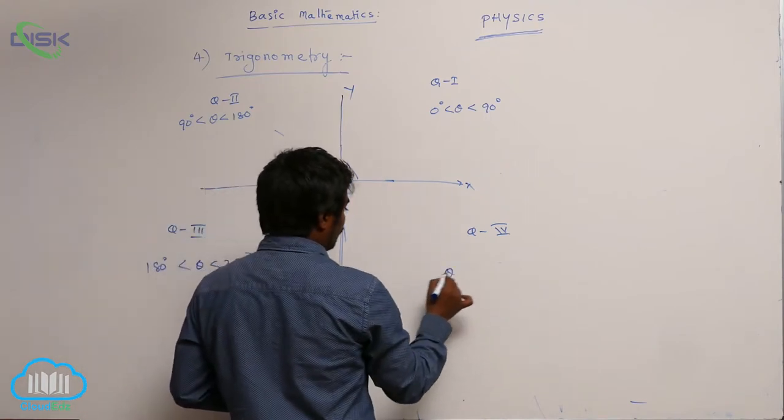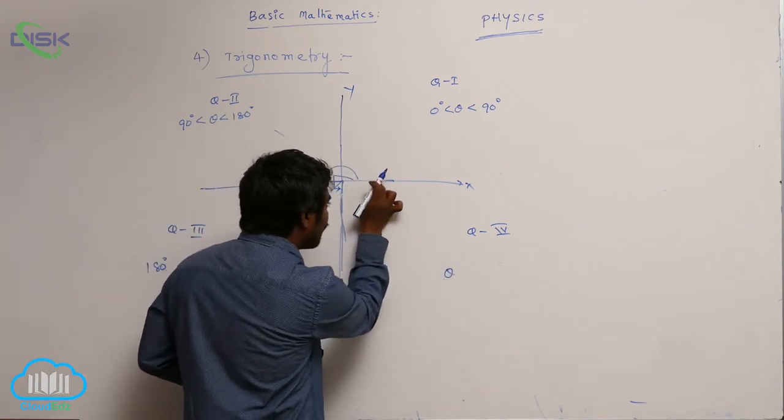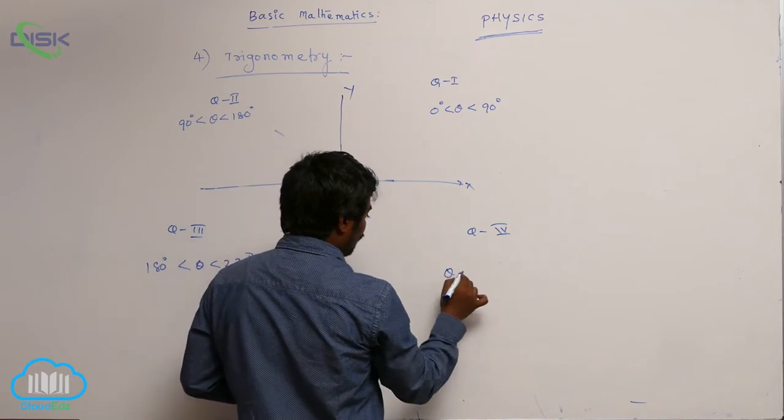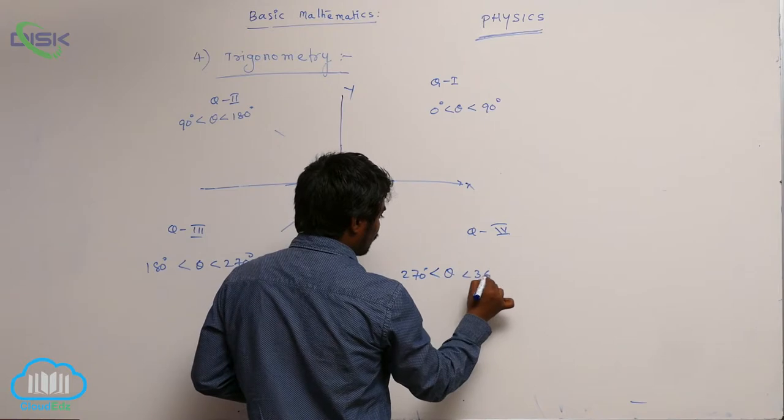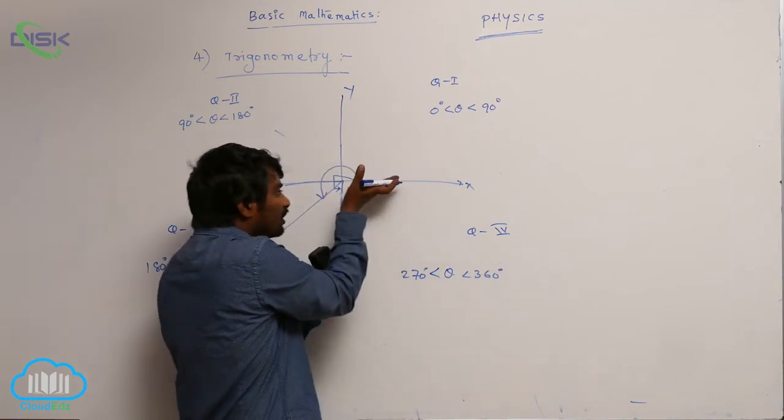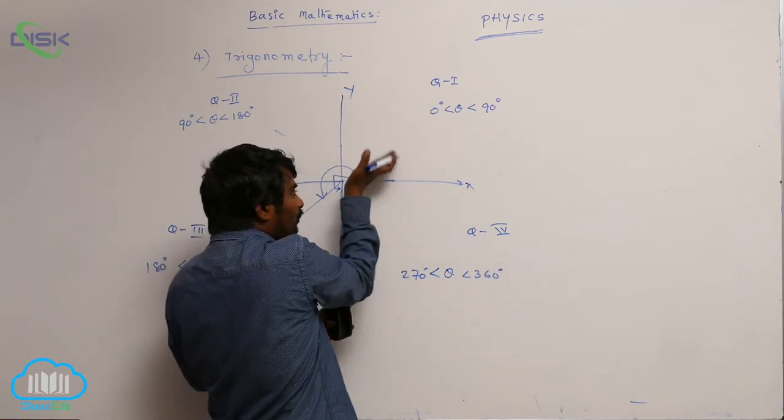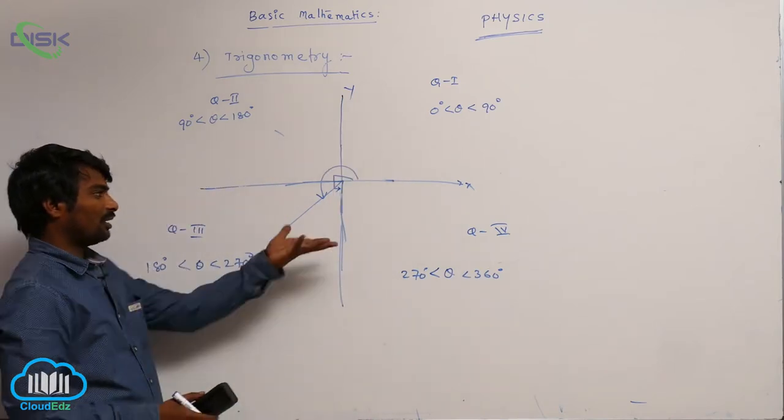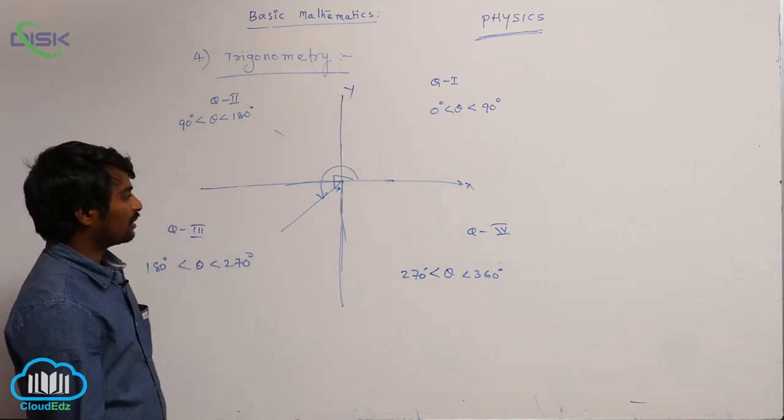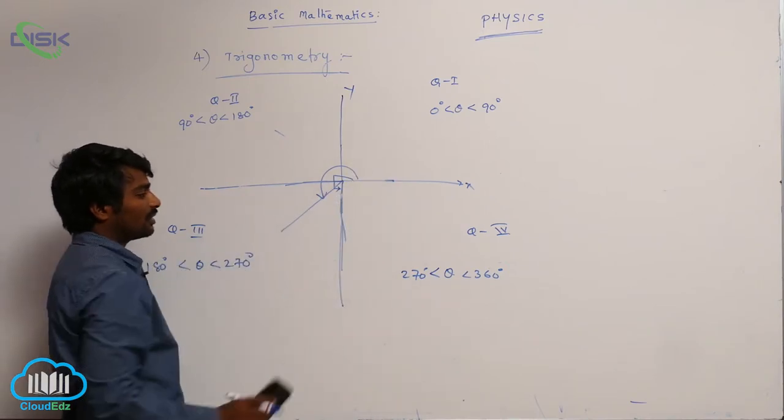In the fourth quadrant, it is greater than 270 and less than 360. Again, 360 plus some value that is less than 90 degrees again falls in the first quadrant.